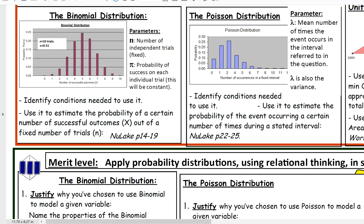Whereas with Poisson, it's used to estimate the probability of an event occurring a certain number of times during a stated interval of time or space. So do we have a fixed number of trials, or is it just occurring in an interval?